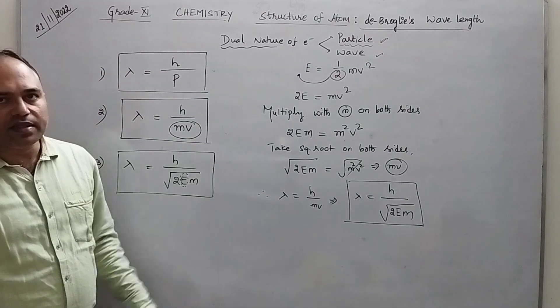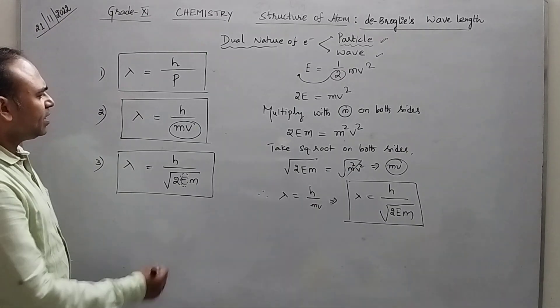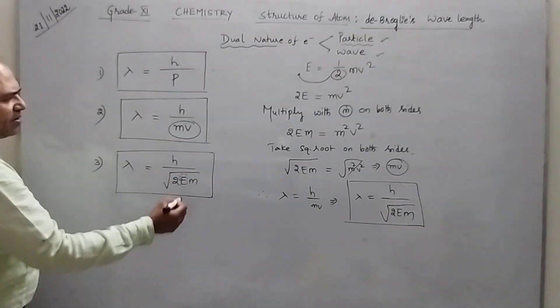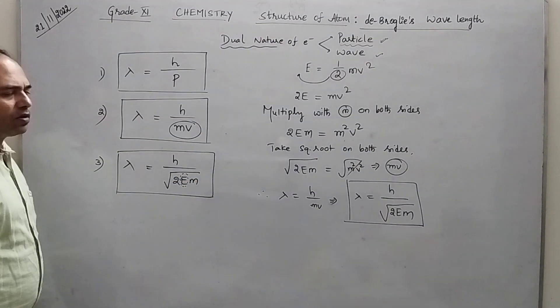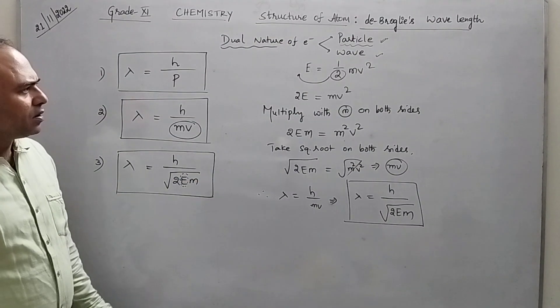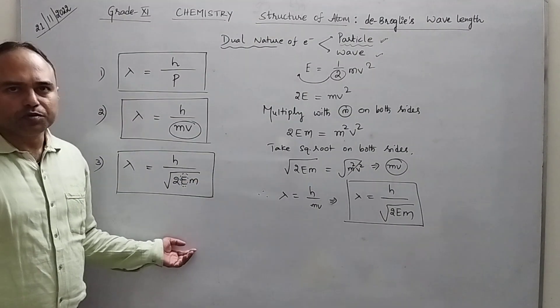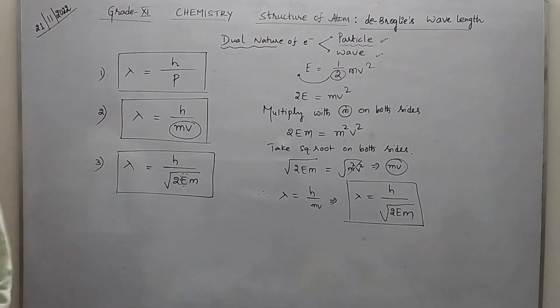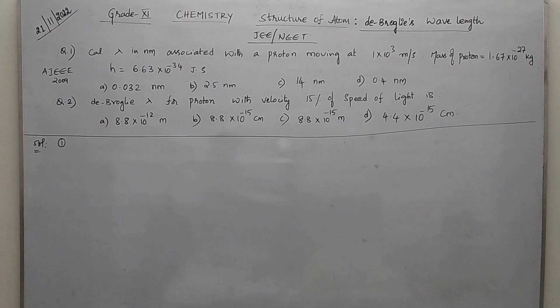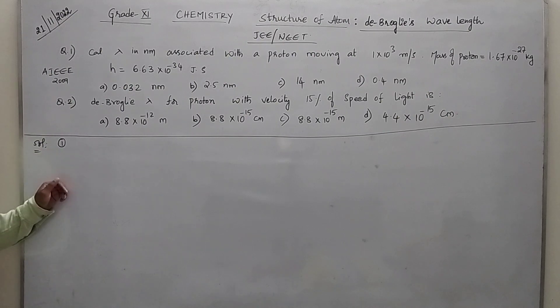So in de Broglie's wavelength we are using these three formulae. Now let us solve the objective questions. Let us see numericals 1 and 2.